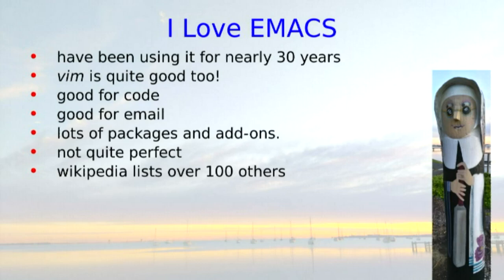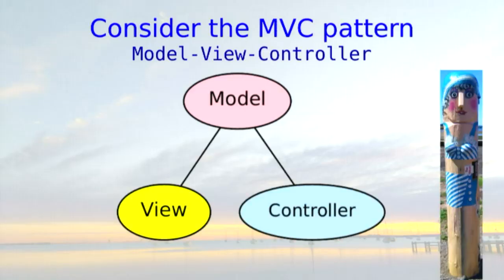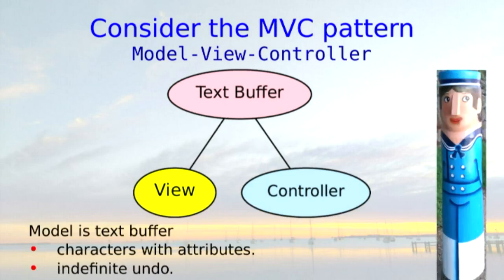A good way to think about editors is through the MVC pattern — model, view, controller. The model describes the thing being edited, the view is how you see it, and the controller is how you control it. Looking at Emacs particularly, the model is a text buffer — a very well-defined thing. It's a bunch of characters, each character can have attributes, and there's an amazing collection of attributes. You can define your own: colour, whether it's invisible or not. And you can have indefinite undo.